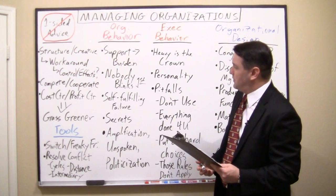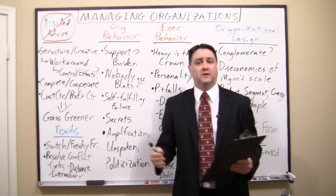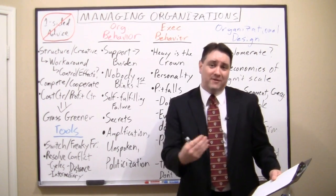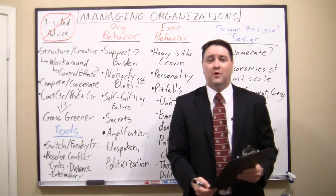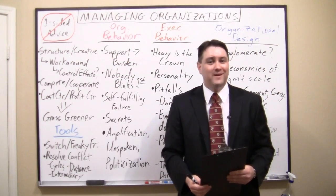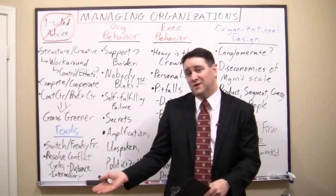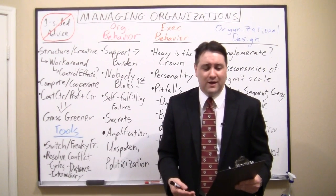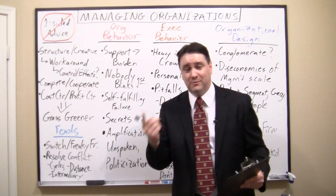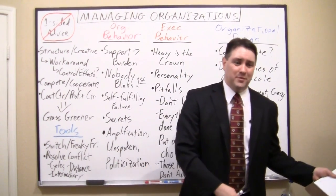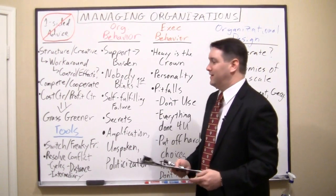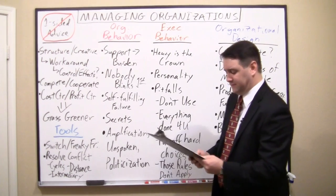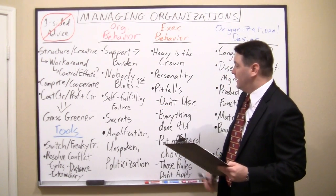Another organizational behavior quirk is 'nobody wants to blink first.' In product development or manufacturing, when everyone is responsible for their component and probably a couple of weeks behind, nobody wants to be the first to come forward — because once you do, all the delay gets pinned on you, and everybody else free-rides saying they would have been on time. As a result, an unofficial schedule emerges where people quietly tell each other they have a few extra weeks, nothing is official, and none of the executives know about it. That's clearly not efficient.